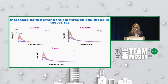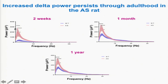Looking at delta power at two weeks, one month, and one year, we see at all three time points a spike in the very slow frequencies — below approximately 5 Hz, which are the delta frequencies — in the AS rats compared to wild type animals. This is consistent across development.